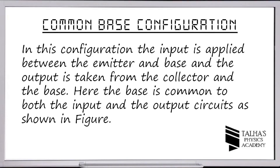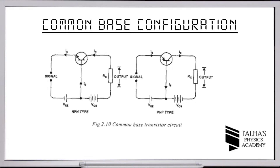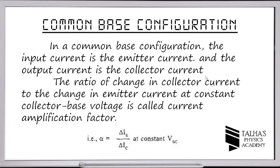As the name suggests, in the common base configuration the base is common between the input and the output. In this configuration the input is applied between the emitter and base, and the output is taken from the collector and base junction. As shown in the figures for both NPN and PNP type transistors, the base is common between input and output.